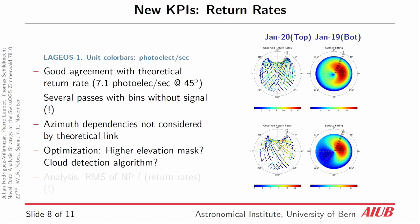This highlights that there are azimuthal dependencies that are not considered by the theoretical link equation. This brings us to the point: could we increase the elevation mask? Would increasing the elevation mask make sense? And further, would we lose arc length due to increasing the elevation mask? Those two are correlated and one has to find a balance to not lose coverage arc-wise. There are also specific passes where the number of returns is higher than in other parts of the horizon, which will impact the normal point formation and is worth investigating.